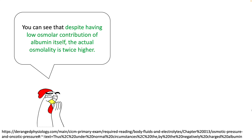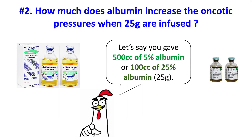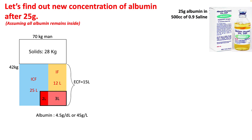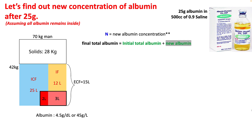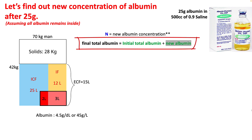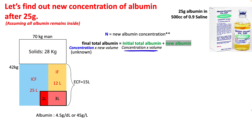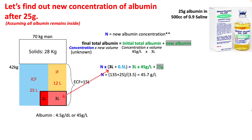So you can see that despite the low osmolar contribution of albumin itself, the actual osmolality is twice higher. The next question is how much does albumin increase the oncotic pressure when you give 25 grams — which can come from 25% or 5% albumin. Your final total albumin will be equal to the initial albumin plus the new albumin added. Total albumin is concentration times volume. So your initial albumin is 45 g/L multiplied by a plasma volume of 3 liters. The new volume is your plasma volume plus 0.5 liters from the infusion of 5% albumin, giving a new concentration of 45.7 g/L.